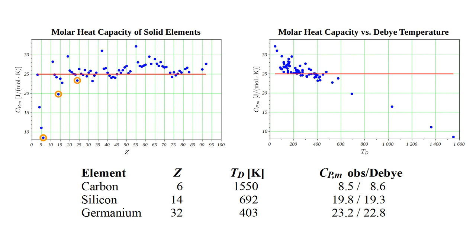Let's look at three examples. Carbon, in the form of graphite, has a Debye temperature of 1550 Kelvin. At room temperature, its observed molar heat capacity is only 8.5 joules per mole Kelvin, far below the prediction of the Dulong-Petit law. But we can understand this using the Debye model, which predicts a value of 8.6.